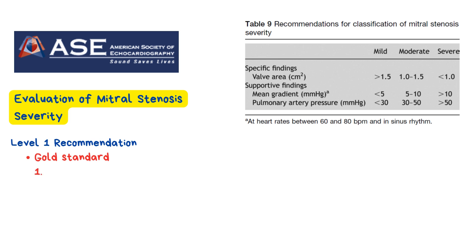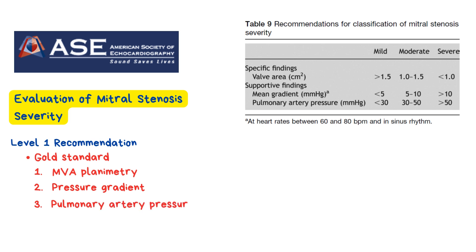Level 1 methods include: first, mitral valve area by planimetry, where you directly trace the valve opening from the parasternal short-axis window at the MV level. Second, the mean pressure gradient, obtained using pulsed wave Doppler across the mitral valve. Third, pulmonary artery systolic pressure, estimated using the tricuspid regurgitant jet via continuous wave Doppler through the tricuspid valve, typically in the apical four-chamber window. And lastly, pressure half-time, which reflects how quickly the left atrium empties into the left ventricle.